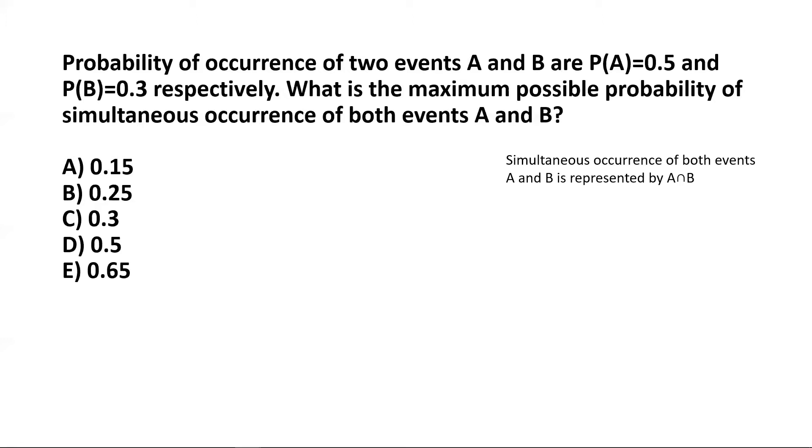Now some of you may be gravitated towards concluding that P(A∩B) will be equal to product of P(A) and P(B) and that comes to 0.15 in this case like 0.5 multiplied by 0.3 so that's 0.15. So is this correct?